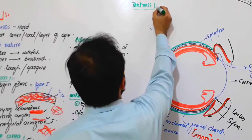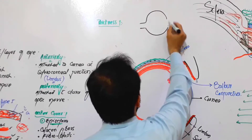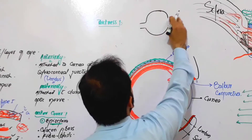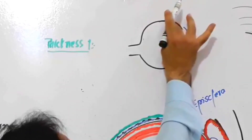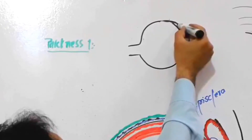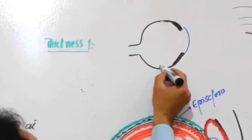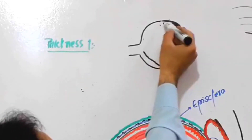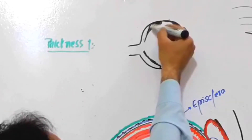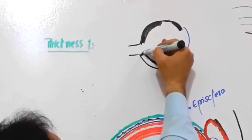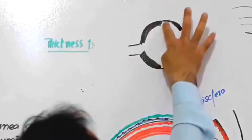Let me draw another diagram. Look carefully — if this is our sclera and here is our cornea, look at the thickness. It narrows down and then it again becomes more and more thicker. So look at the thickness — there is a big difference between the thickness of the sclera at different points.